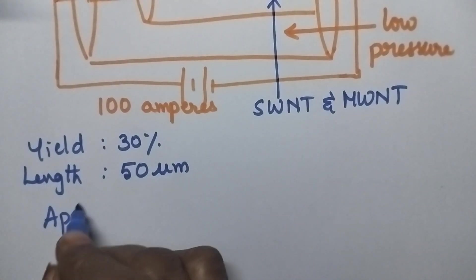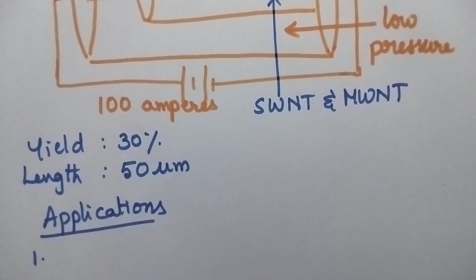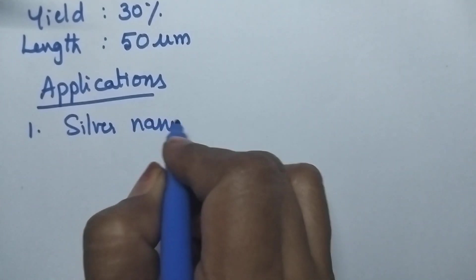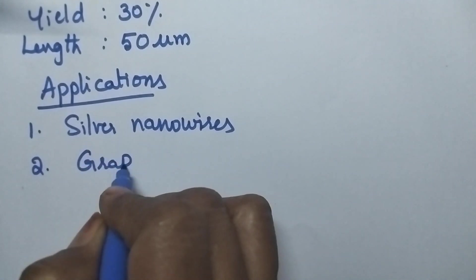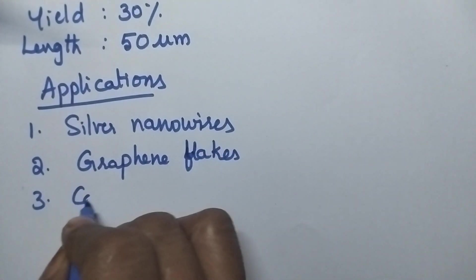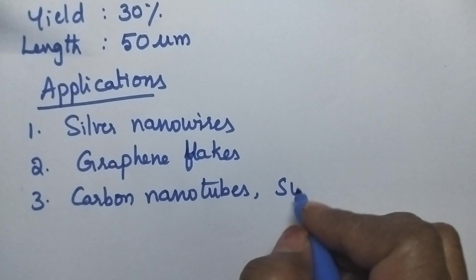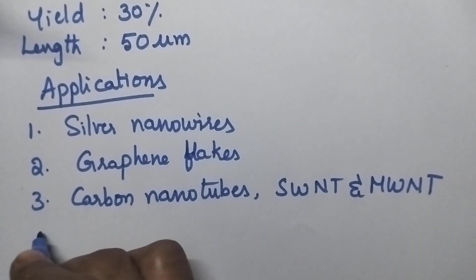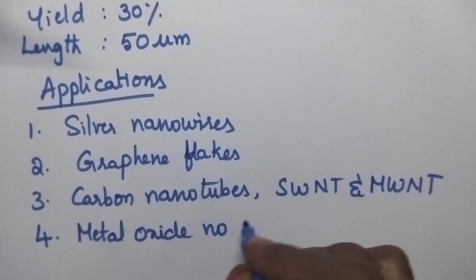Coming to the applications of arc discharge method: it's useful for the preparation of silver nanowires, graphene flakes, carbon nanotubes having both single-walled and multi-walled dimensions, and metal oxide nanomaterials.